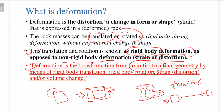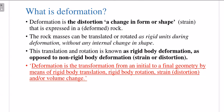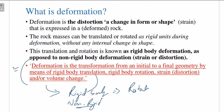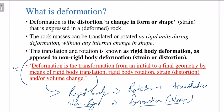Non-rigid body deformation is your strain or distortion, which means change in shape, size, form, or volume. Deformation is the transformation from initial to final geometry by means of rigid body translation, rigid body rotation, strain, and/or volume change. So deformation has rigid body components — rotation and translation — and non-rigid body deformation, which is distortion or strain. Distortion or strain means change in shape, size, or volume of the rock.